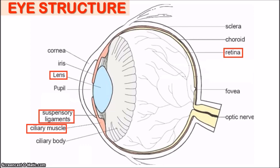The lens would be the transparent oval-shaped part behind the pupil and the iris which changes shape and allows light to focus onto the retina. The suspensory ligaments are the thin fibrous bands attached to the lens that control the shape of the lens by behaving like elastic ropes that stretch or loosen. And then the ciliary muscle is part of the ciliary body found behind the iris which contracts and relaxes to adjust the shape of the lens.